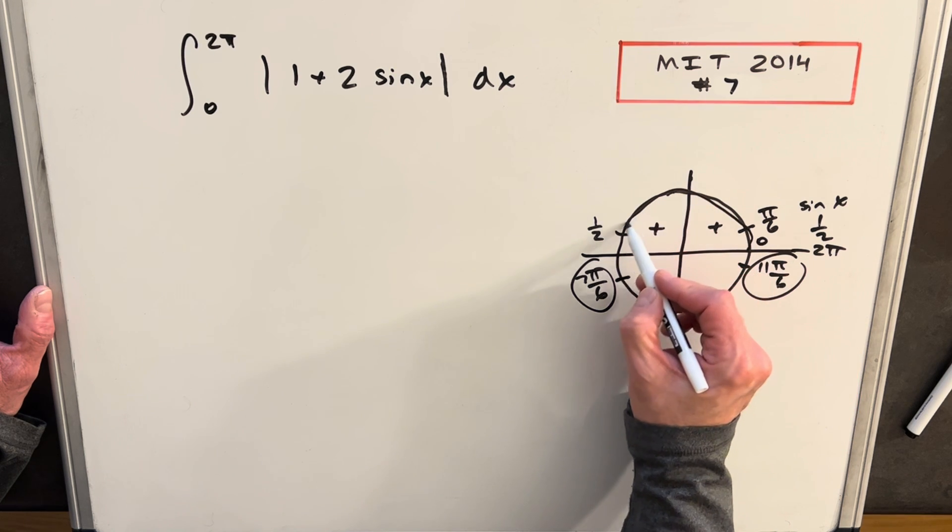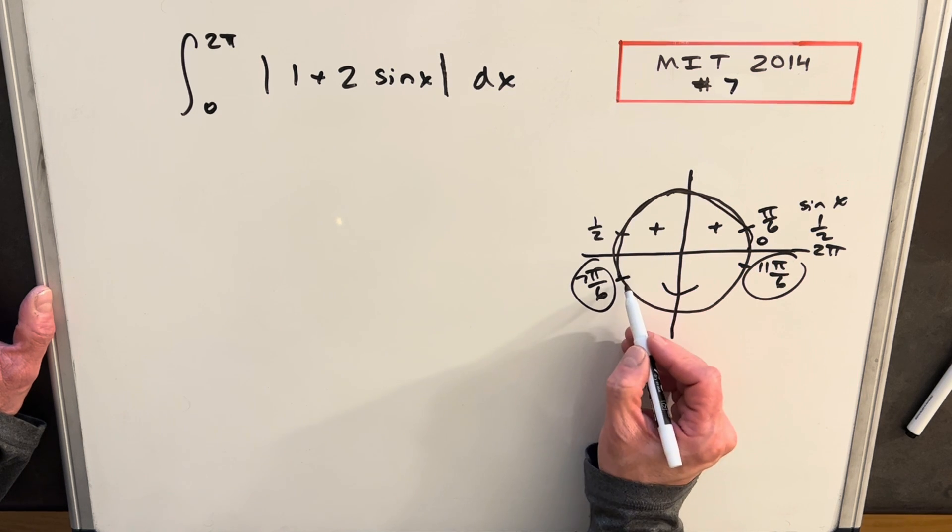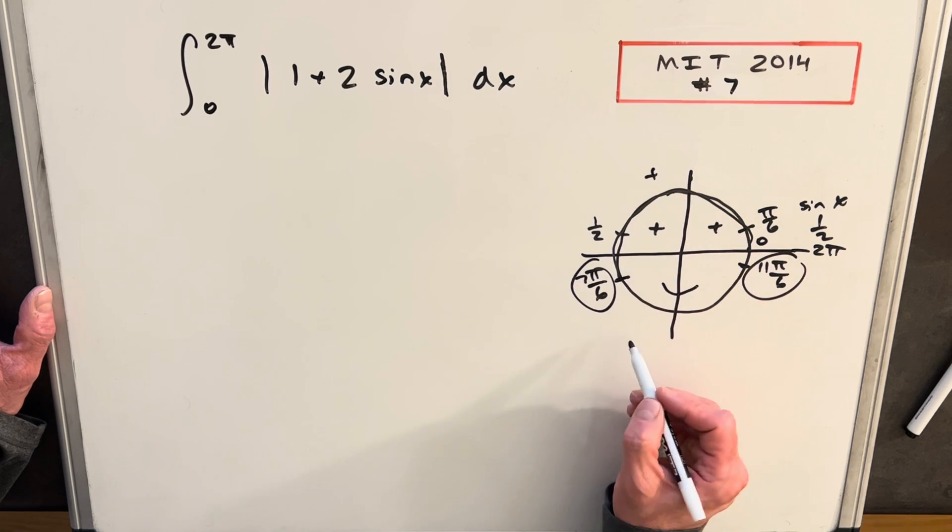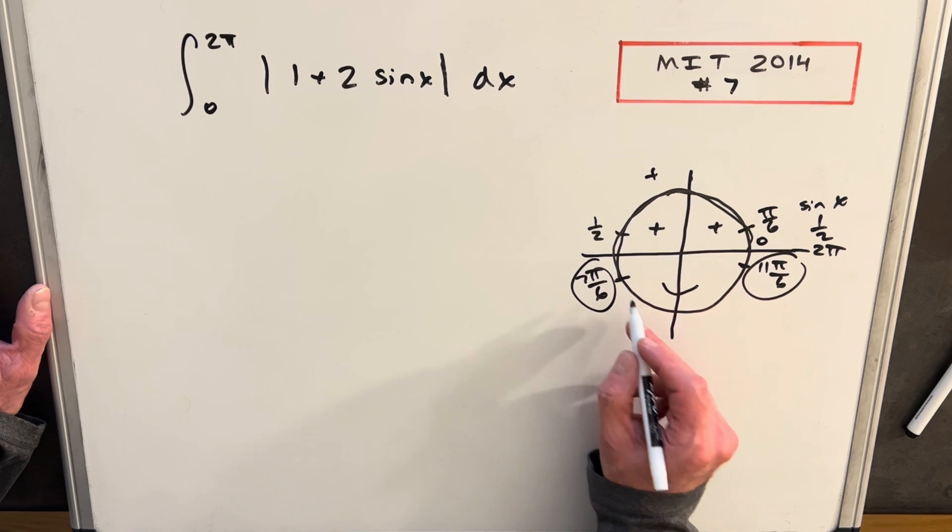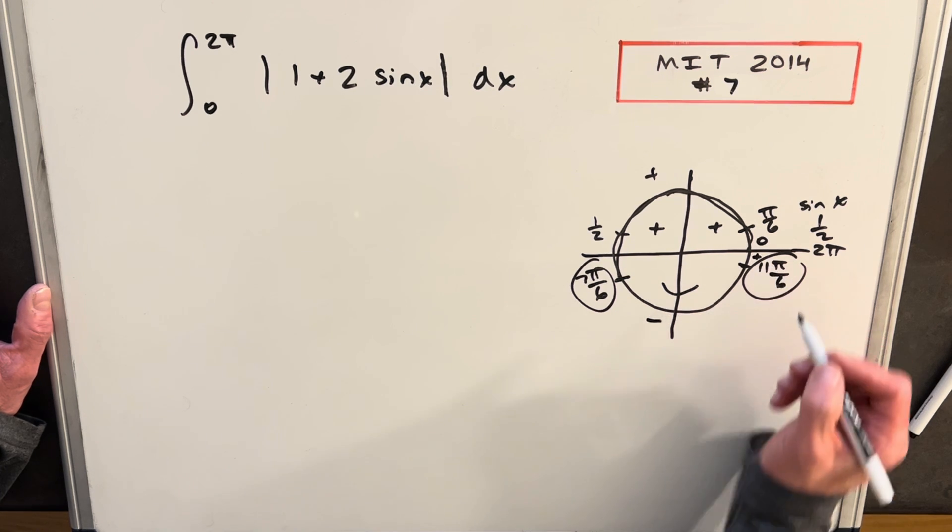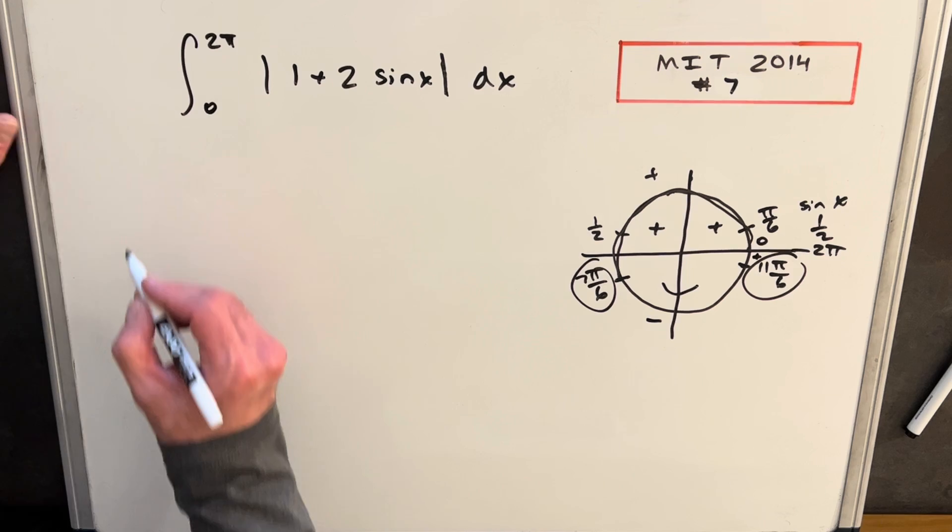This whole region here is going to be positive to 7π over 6. This whole region in the bottom here is going to be negative, and then we're going to have a little positive region right there. So let's see what happens when we break this up.